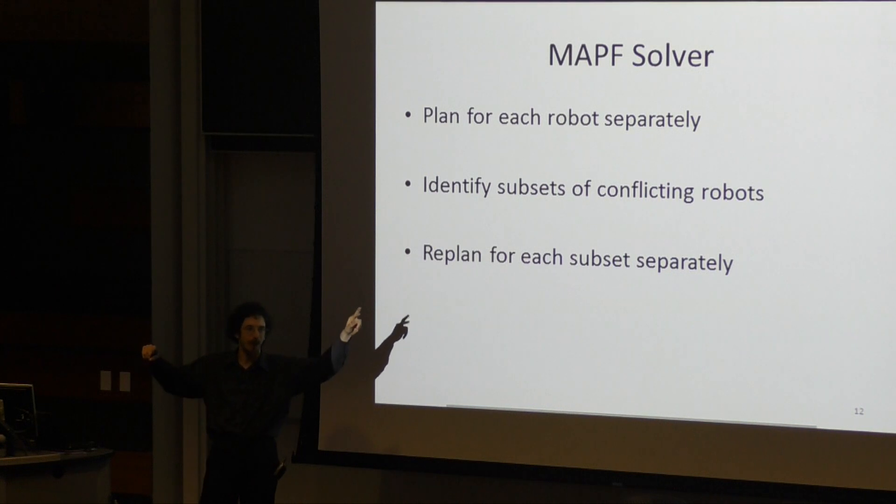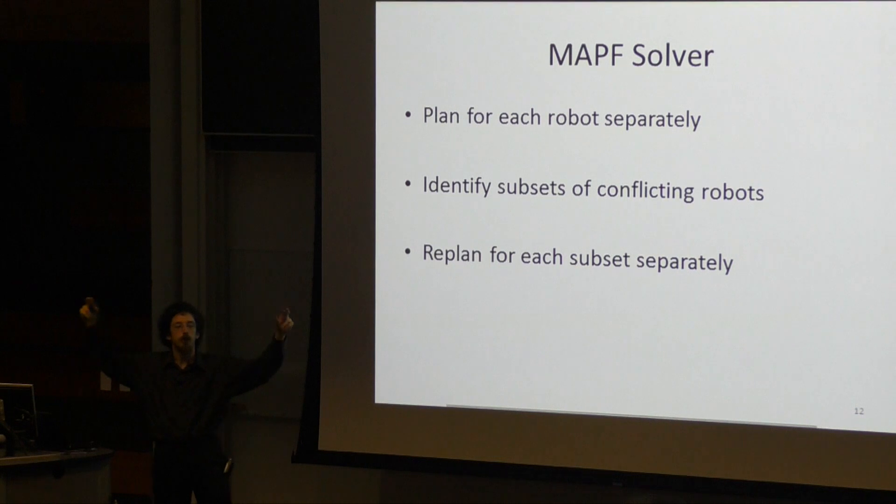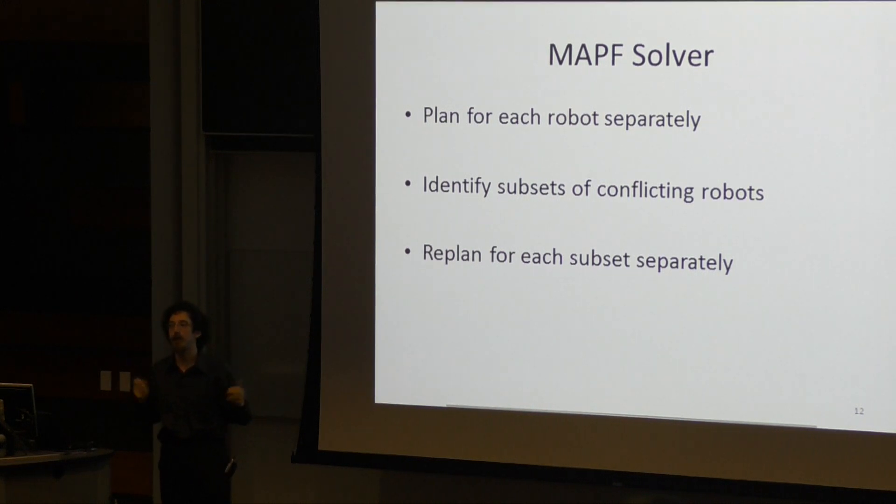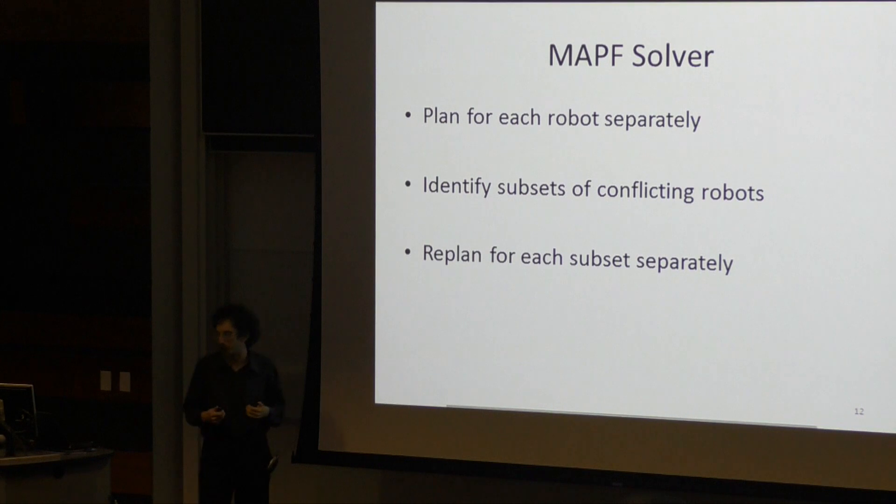So you might have two robots that interfere with each other over here, two robots that interfere with each other over here, solving for each of those subsets of robots separately, just ignoring the other robots, and repeating that inner loop over and over again until you finally have resolved all your conflicts. If you do this right, you can get guarantees that you will not only find a path, but you will find the optimal paths.